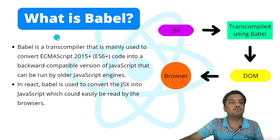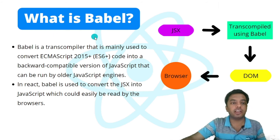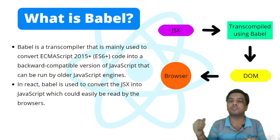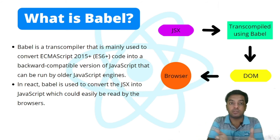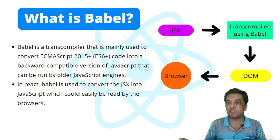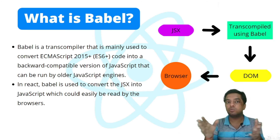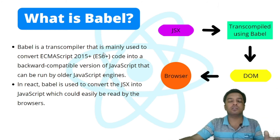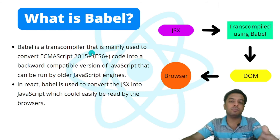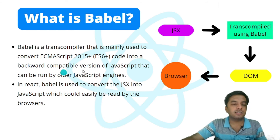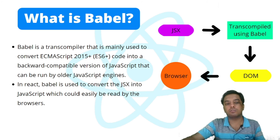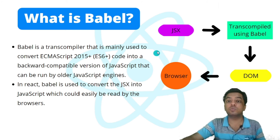Babel is a transpiler mainly used to convert ECMAScript 2015+ (ES6+) code into a backward-compatible version of JavaScript that can run on older JavaScript engines. There are many older browsers not compatible with new versions of JavaScript, so they won't understand React either. Babel solves this by converting the latest ES6+ code into backward-compatible JavaScript so it can be read by all engines. In React, Babel is specifically used to convert JSX into JavaScript readable by browsers.